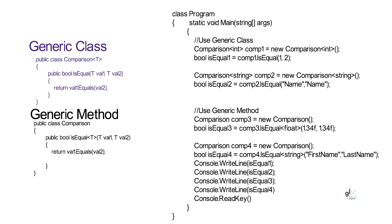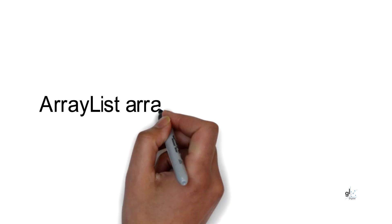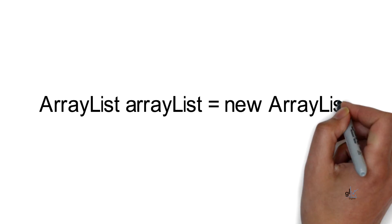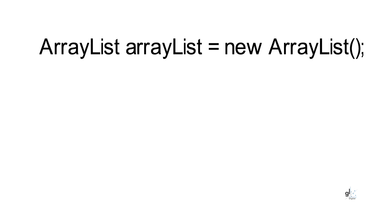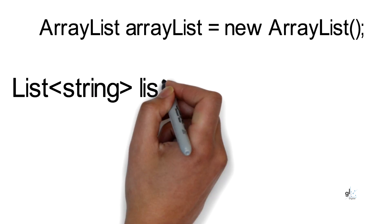We'll discuss what is meant by boxing operations and runtime casting a bit later in this video. Generic classes and methods combine reusability, type safety, and efficiency in a way that their non-generic counterparts cannot. Generics are most frequently used with collections and the methods that operate on them.